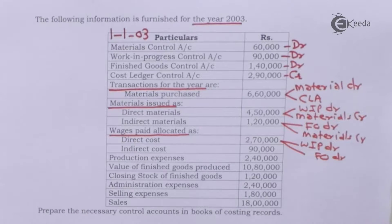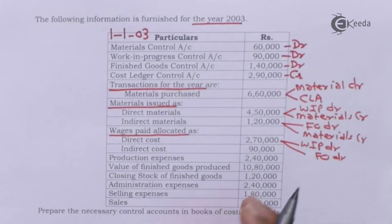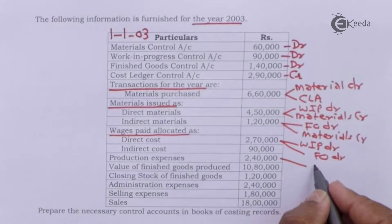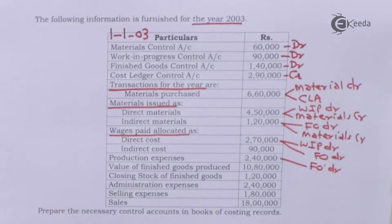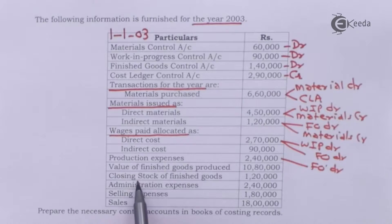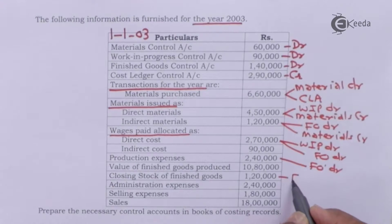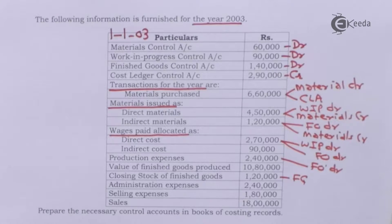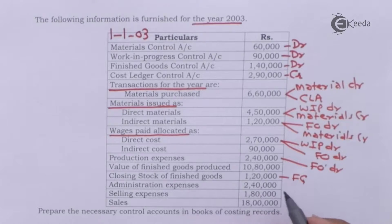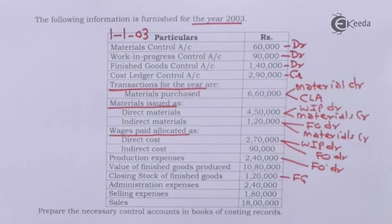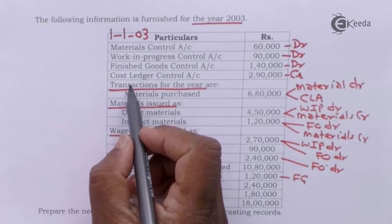Wages paid: direct cost goes to Work in Progress debit, indirect cost to Factory Overheads debit, and the second effect is Wage Control Account credit. Production expenses go to Factory Overheads Control Account debit. Value of finished goods produced: Work in Progress credit, Finished Goods debit. Closing stock of finished goods: Finished Goods Control Account credit. Administration and selling expenses can be directly debited to Costing Profit and Loss Account. Sales will be recorded in Costing Profit and Loss Account, and final profit will be transferred to Cost Ledger Control Account.